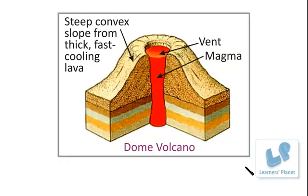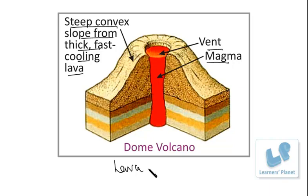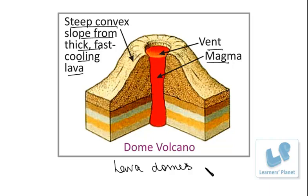The last type is the dome volcano, also called lava domes. Dome volcanoes are formed when erupting lava is too thick to flow and it makes a steep-sided mound as the lava piles up near the volcanic vent. The eruption of Mount St. Helens in 1980 was caused in part by a lava dome shifting to allow explosive gas and steam to escape from inside the mountain. It was named a dome volcano by its shape.